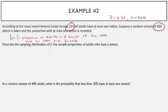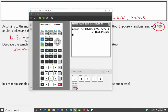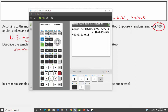Describe the sampling distribution of p-hat. Again we do the number check: n times p times (1 minus p) must be greater than or equal to 10. That's 400 times 0.21 times (1 minus 0.21), which gives 66.36, which is greater than or equal to 10.